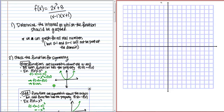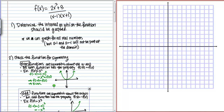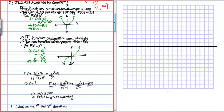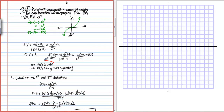We have determined that the domain is all real numbers except for 1 and negative 1, so we could write that as negative infinity to negative 1, union negative 1 to 1, union 1 to infinity. We've checked it for symmetry and determined that it has even symmetry, which means it's symmetric across the Y-axis.